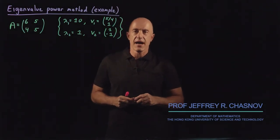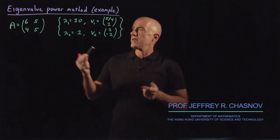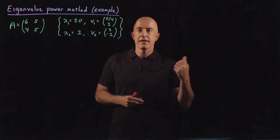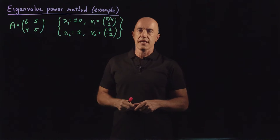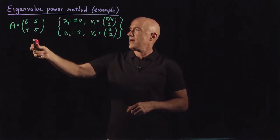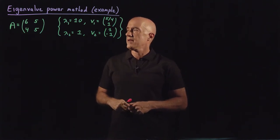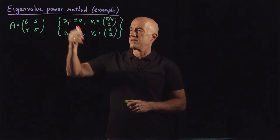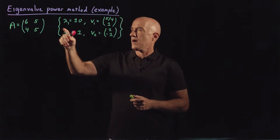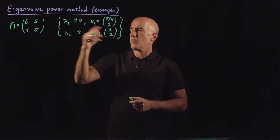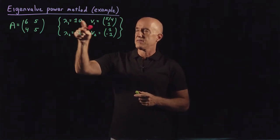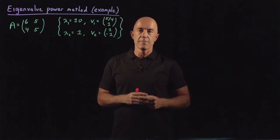In the last video I discussed the theory behind the eigenvalue power method. The theory is okay to understand but it's always good to look at a simple example. So let's look at this 2 by 2 matrix A = [6, 5; 4, 5]. I chose this matrix so that it has two eigenvalues that are far apart in magnitude: lambda 1 is 10 and lambda 2 is 1. So let me show you how this power method can easily pick out the dominant eigenvalue.